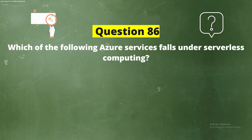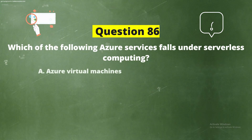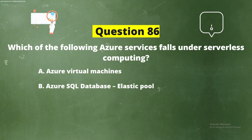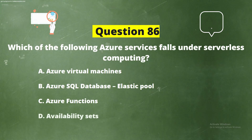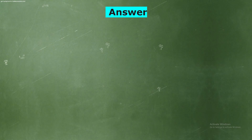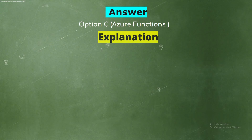Question 86: Which of the following Azure services falls under serverless computing? Options: A) Azure Virtual Machines, B) Azure SQL Database Elastic Pool, C) Azure Functions, D) Availability Sets. The correct answer is option C, Azure Functions.